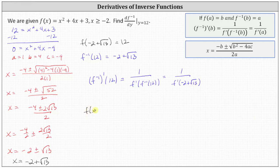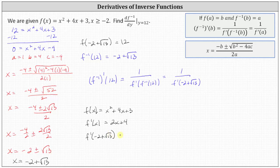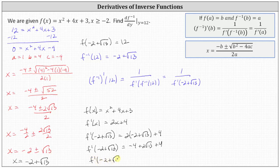We have f of x equals x squared plus 4x plus 3, and therefore f prime of x equals 2x plus 4. Evaluating, f prime of negative two plus square root of 13 equals two times the quantity negative two plus square root of 13, plus 4. Distributing, we have negative four plus two square root of 13 plus four. So f prime of negative two plus square root of 13 is equal to two square root of 13.